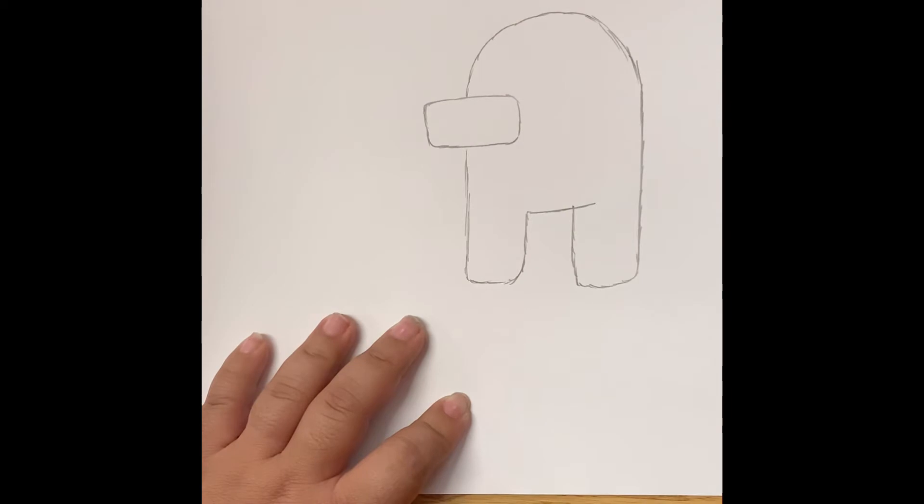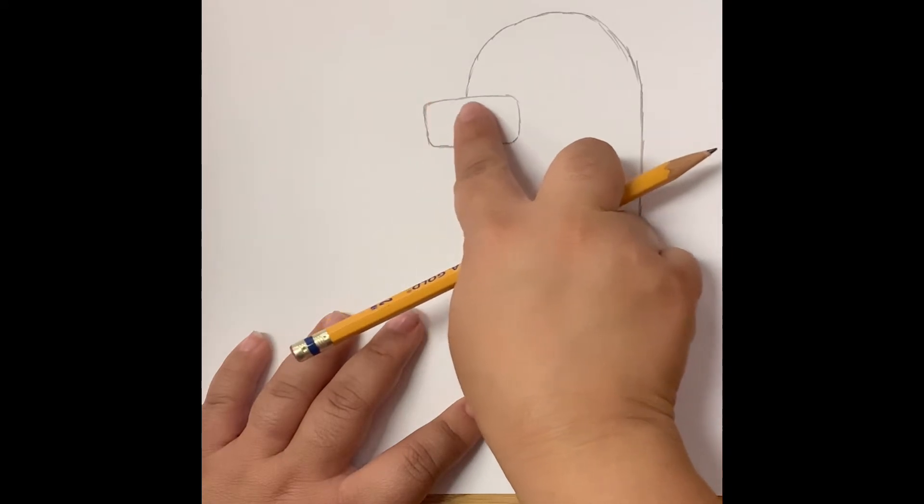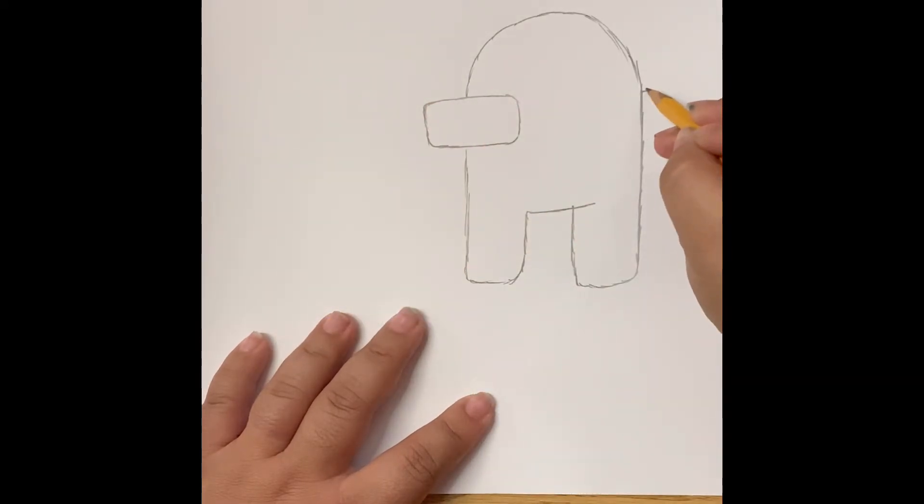Then I'm going to draw a line going in this way. Then from there he needs his little jetpack, so right where the same line is that I started right here, I'm just going to draw a little rectangle, long skinny rectangle for his jetpack.